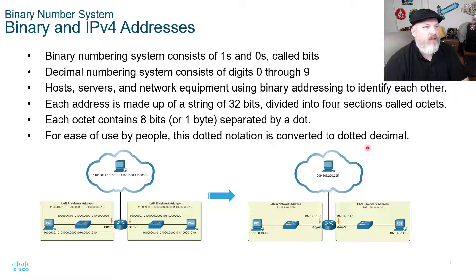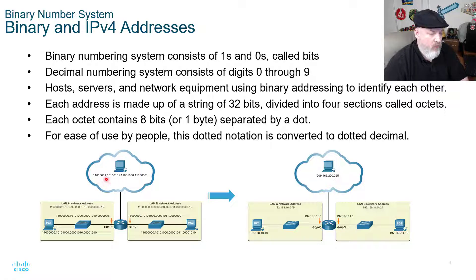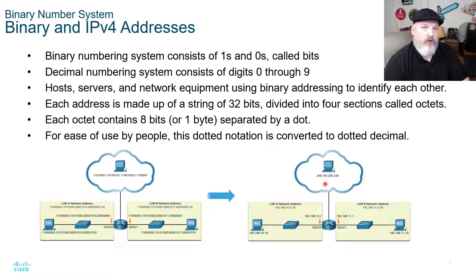So when we look at this down below, we have ones and zeros — our octets — with ones and zeros in each position, separated by a dot. So we have our four octets. And when that gets converted, over here on the right-hand side, we convert the binary over into decimal so it's easier for us to read.